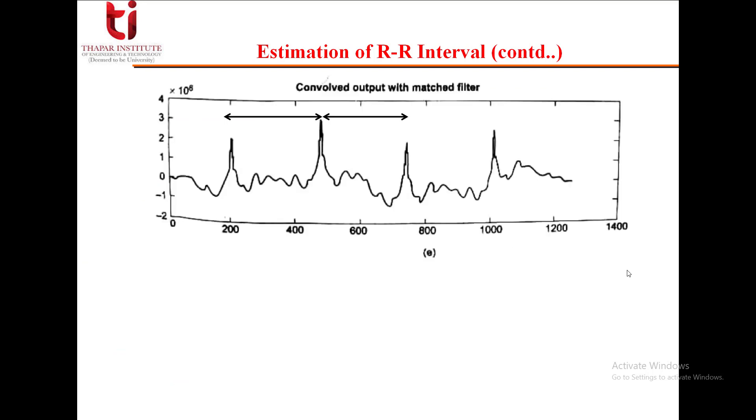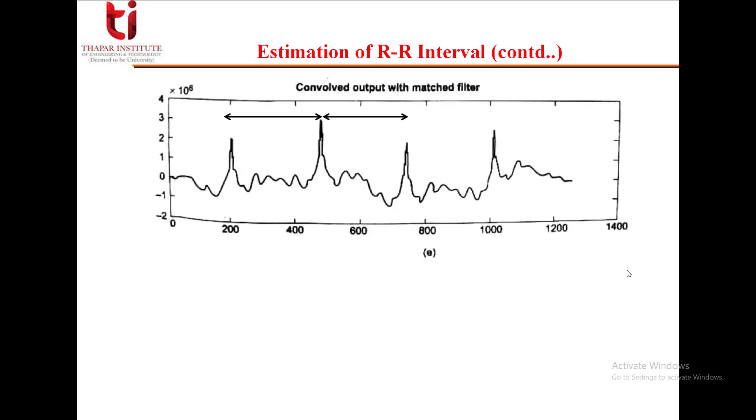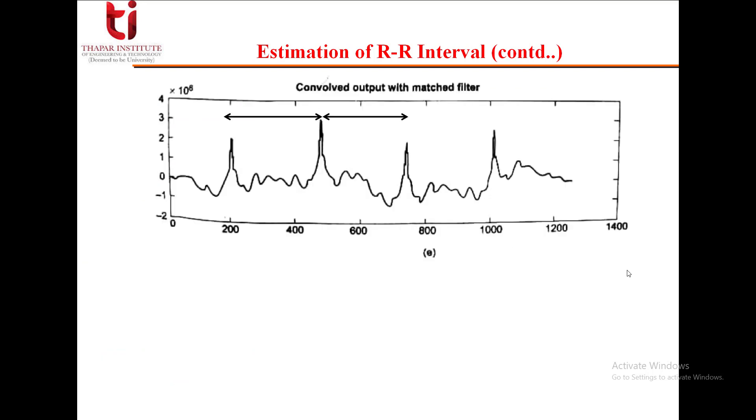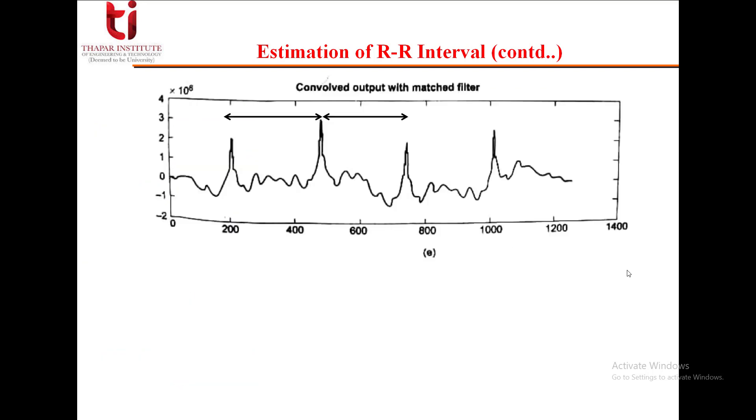From this, the RR intervals are to be determined. In figure E, the RR intervals are at 273, 260, and 271 respectively, obtained by the process of matched filtering. They are found to be in close agreement with the actual measured values: 270, 260, and 270 respectively.